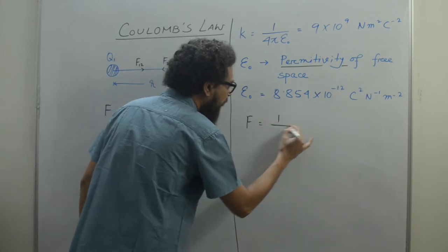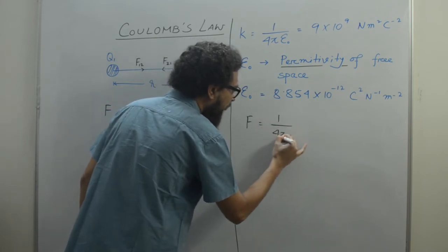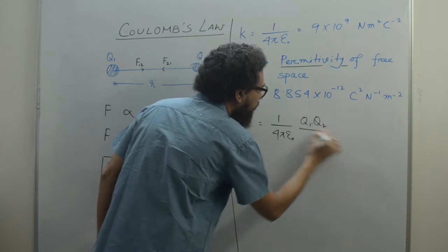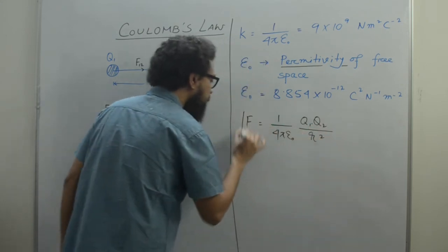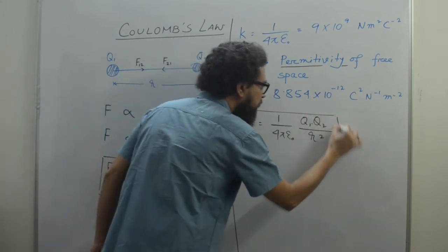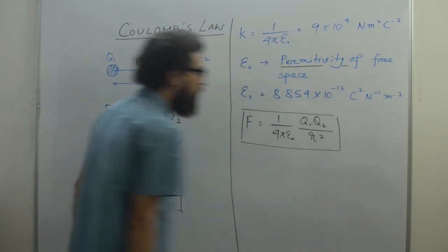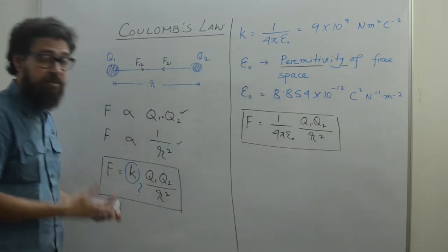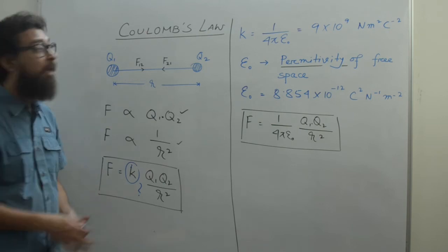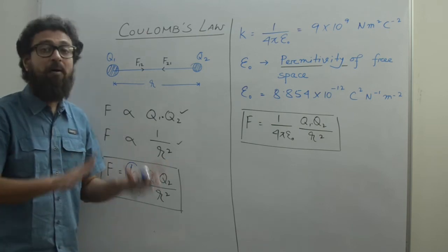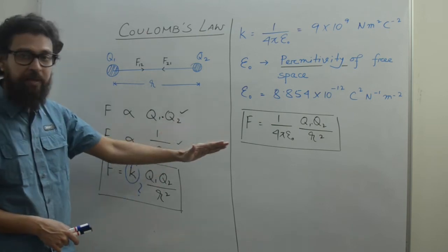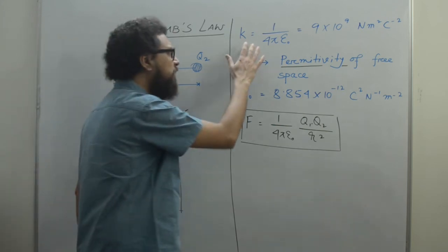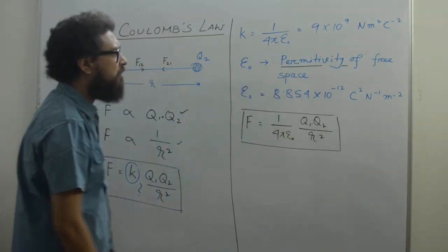Now we have the complete expression in the SI system: F = (1 / 4πε₀) × Q1 Q2 / r². This is the magnitude of the Coulomb force of attraction or repulsion for a pair of charges placed in free space or vacuum. We have also learned about all these values, constants, and everything.